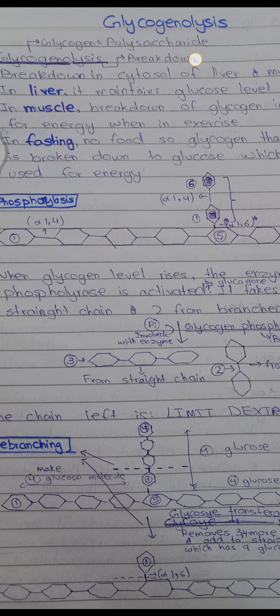For each released glucose molecule, a phosphate group is added by phosphorylase. Drawing the glucose structure: a six-carbon chain with CHO at the top, CH₂OH at the bottom, and alternating OH and H groups along the chain. A phosphate group (OPO₃) is added at carbon 1 (the top), and this molecule is called glucose-1-phosphate.